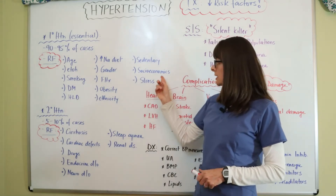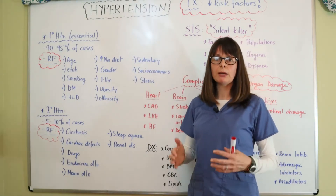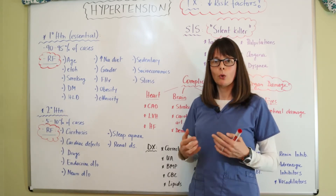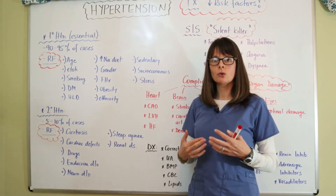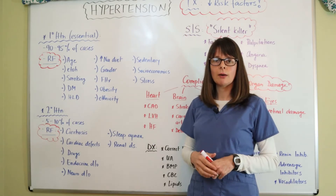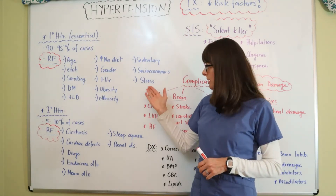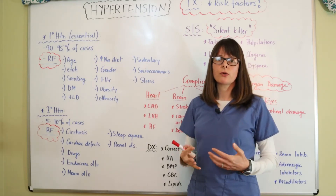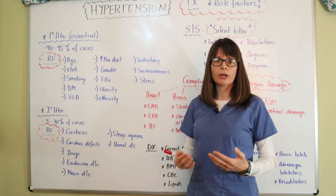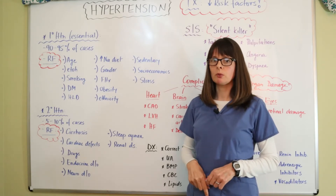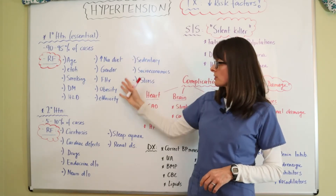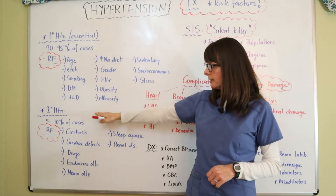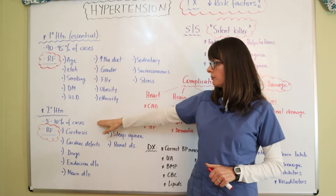Socioeconomic status is another risk factor because people from lower socioeconomic backgrounds typically have lower access to healthcare, a less well-balanced diet, more stress, a sedentary lifestyle, and are less likely to attend regular checkups where high blood pressure could be detected. All these risk factors contribute to primary or essential hypertension.